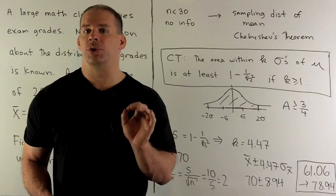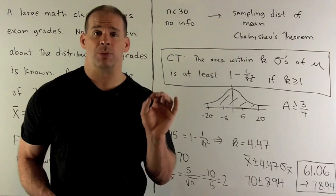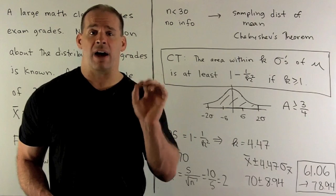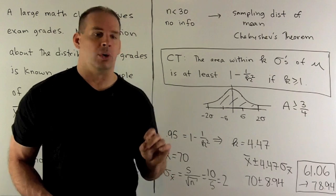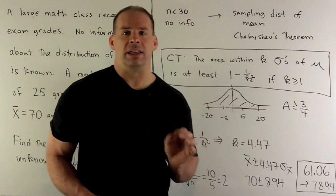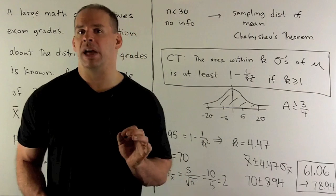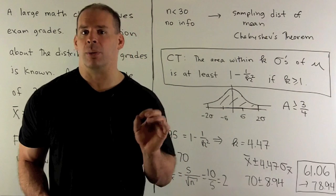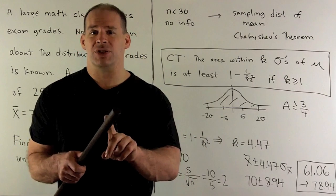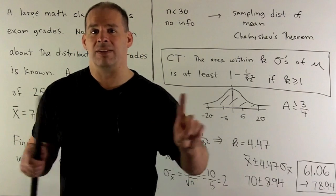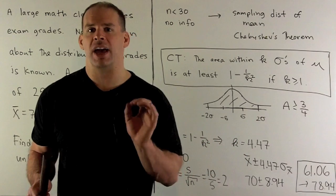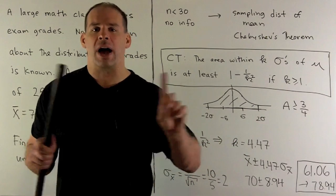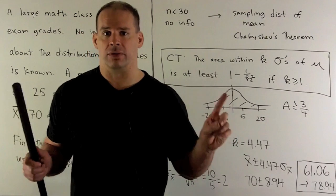If you go to the previous problem and take a look at the two confidence intervals there, you'll note that since we have even less information than we did in our previous problem, this confidence interval is going to get even wider. The idea is: the less information you have, the wider your confidence interval gets.